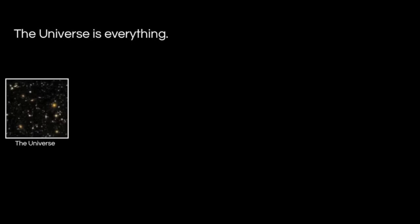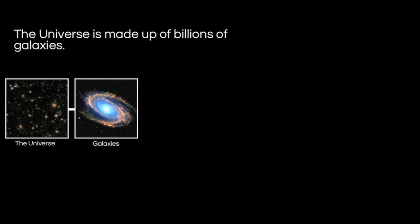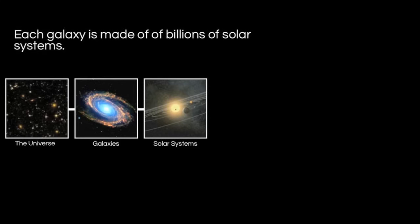So now that we know what all these components are, how does all of this fit together? Let's begin with the largest: the universe — the biggest thing we've talked about. Getting a little bit smaller, the universe is made up of billions and billions of galaxies. Each of those little dots you see in the universe picture are actually individual galaxies. Each galaxy is composed of solar systems. A solar system includes a star and whatever is orbiting around that star. Our solar system has the sun in the center, with the eight planets, comets, asteroids, and other materials orbiting it.